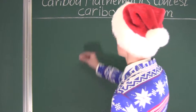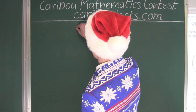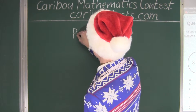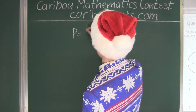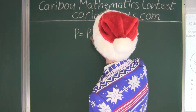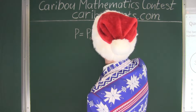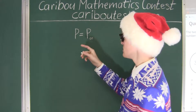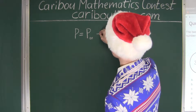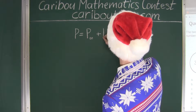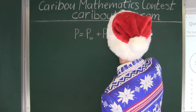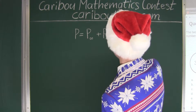Now let's write this. So we have P, which is equal to the probability of two odds — odd and odd — plus the probability of two evens — even and even.